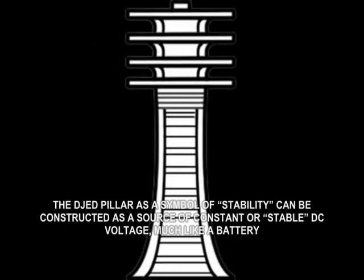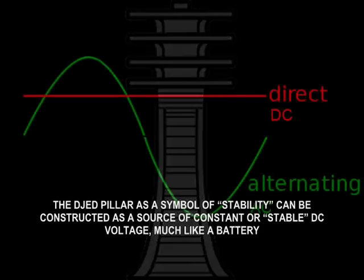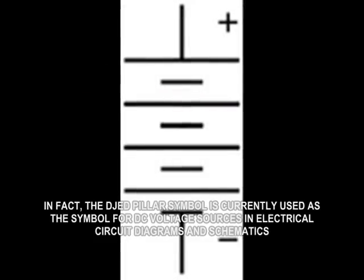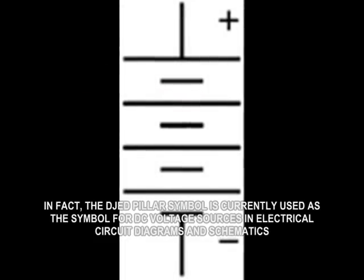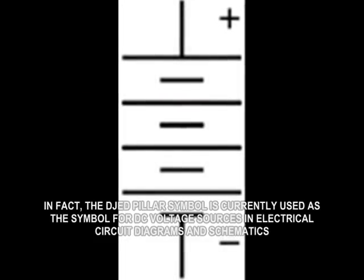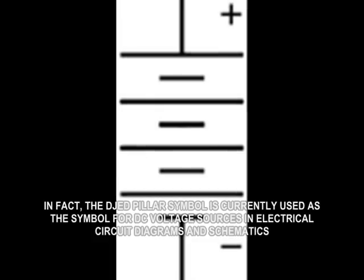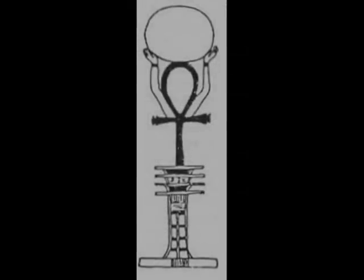The Z-Pillar as a symbol of stability can be constructed as a source of constant or stable DC voltage, much like a battery. In fact, the Z-Pillar symbol is currently used as a symbol for DC voltage sources in electrical circuit diagrams and schematics.